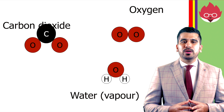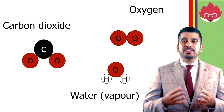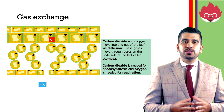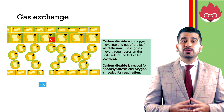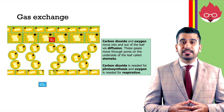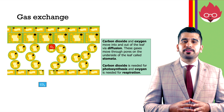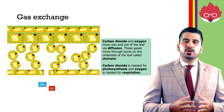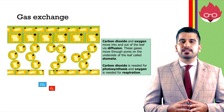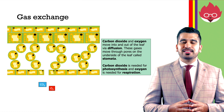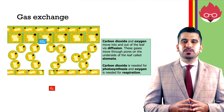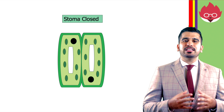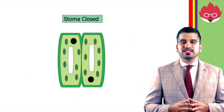For question 1: carbon dioxide, oxygen, and water vapour. For question 2: the stomata are pores found on the underside of the leaf, but can also be found on the upper epidermis. They allow gases such as oxygen and carbon dioxide to leave and enter the cell. They also allow water to escape. Their opening and closing is controlled by guard cells.